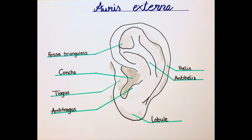The tragus and the antitragus are partially overlying the concha. The external acoustic meatus is in its outer one-third cartilage, and the inner two-thirds are made up of the temporal bone. It's sigmoid-shaped, or S-shaped, which means that it first runs superior anteriorly, then slightly superior posteriorly, and then ends by running inferior anteriorly.